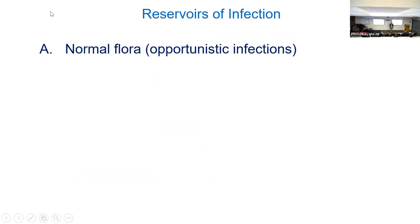Before we get into transmission, let's talk about where the microbes come from — we call this the reservoir, their normal place to be. Reservoir A is our normal flora. E. coli is part of your normal flora, it's in your intestine, and in some cases it can cause bladder infections, pneumonia, or blood infections due to punctures that get E. coli to the wrong place.